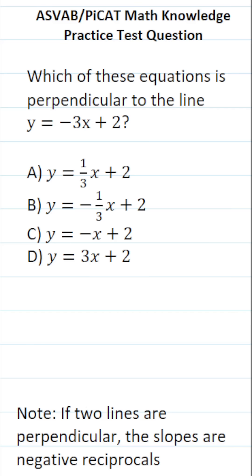This math knowledge practice test question for the ASVAB and PiCAT says, which of these equations is perpendicular to the line y equals negative 3x plus 2?